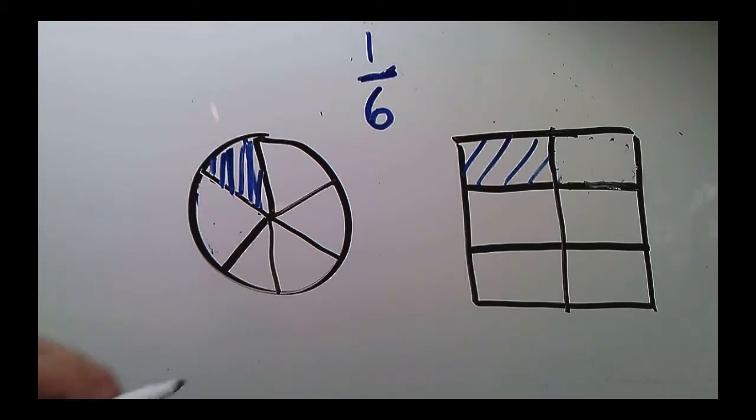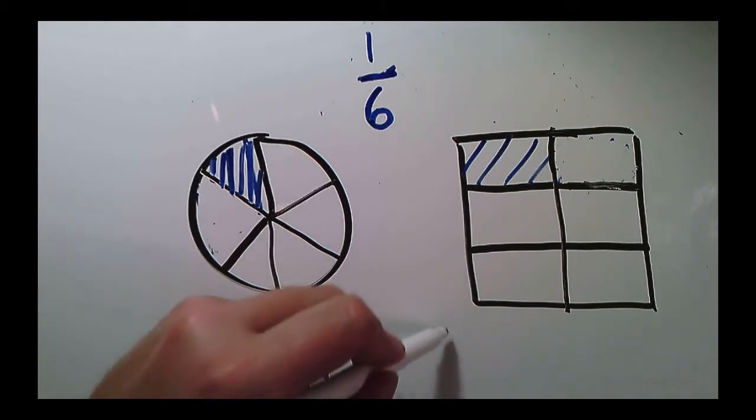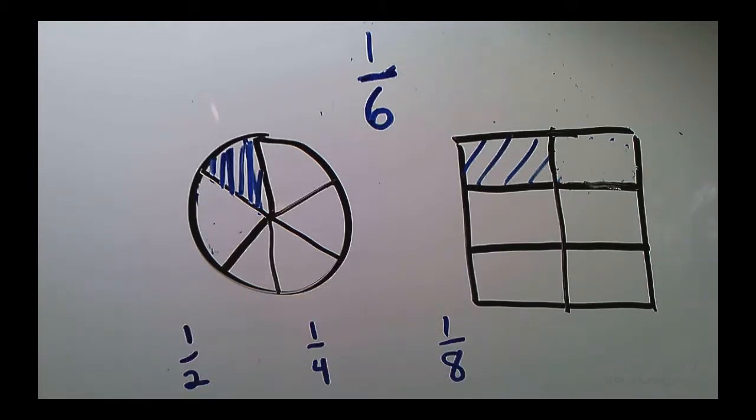So now that covers 1 half, 1 fourth, 1 eighth, which are what I think are the most straightforward because I can keep cutting by twos to get these, then I start with 1 third with three pieces, and then I can cut that in half to get 1 sixth.